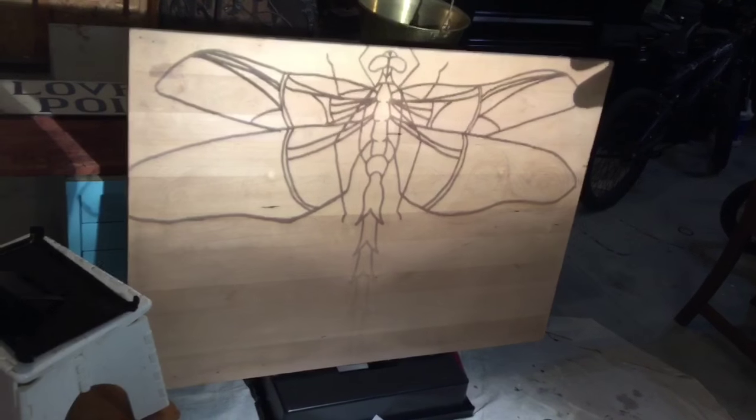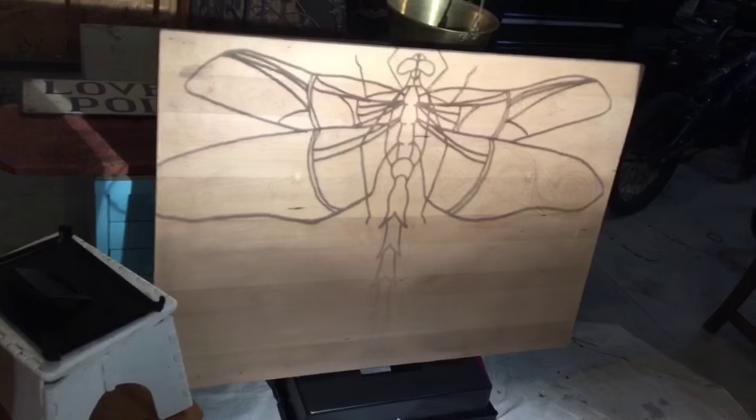Once you get it onto the wood where you want it, just trace it on with an H graphite pencil.